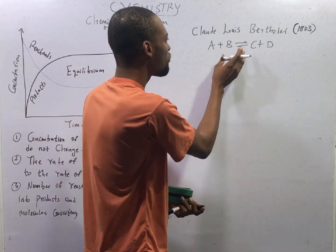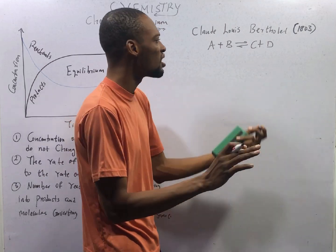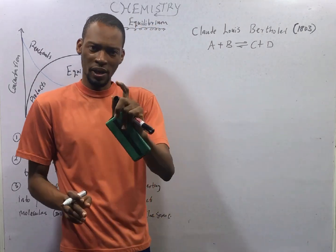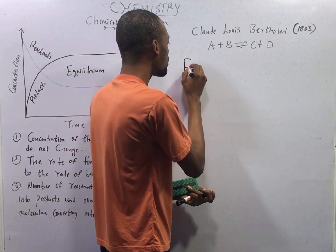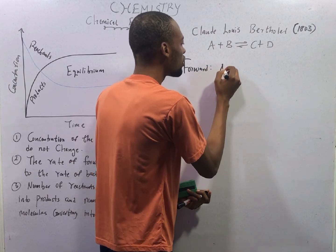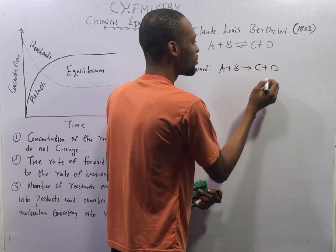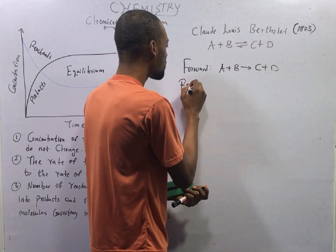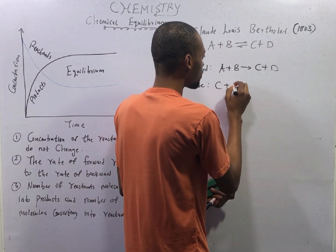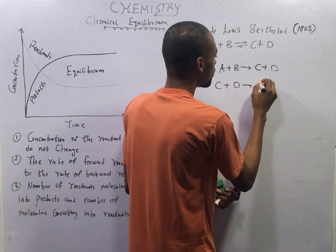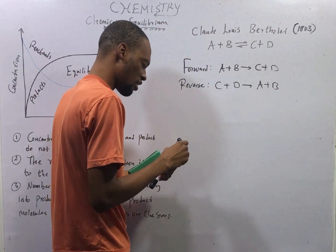If we have something like this, it shows reversibility of reaction, which means this reaction is in two parts: the forward reaction and the reverse reaction. For the forward reaction, we have A + B to give us C and D. In the reverse, we have C + D to give us A + B. This is the forward and this is the reverse direction.